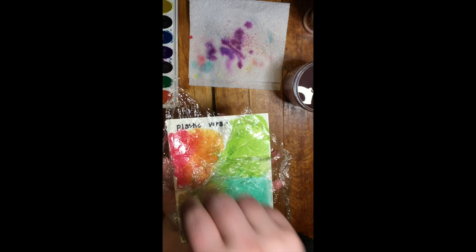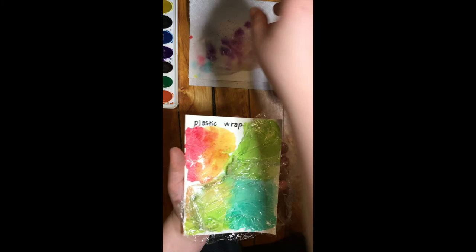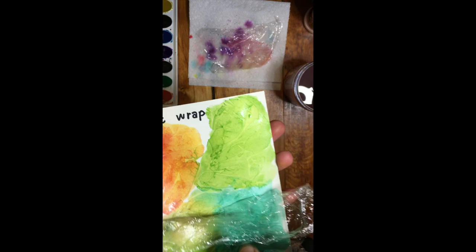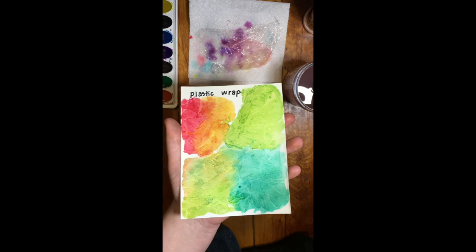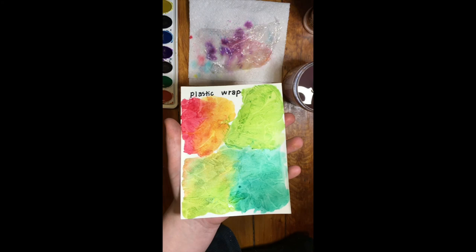So once you have let your plastic wrap paper sit for a while to dry, then you can carefully peel off the plastic wrap. As you can tell, I didn't wait long enough. I probably waited about 15 minutes. So be patient with this and wait long enough for it to dry completely.